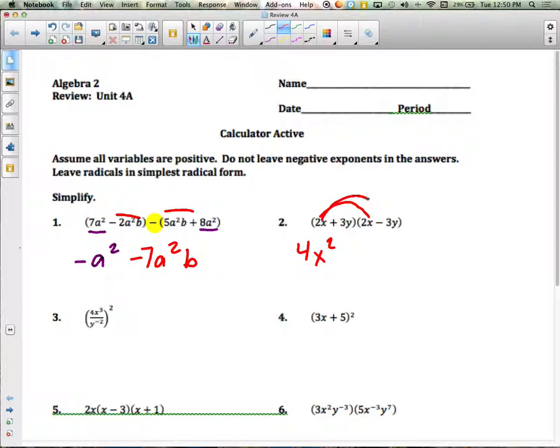And then if you go inside, you'll have 3y times 2x would be positive 6xy. And then if you do last, you'll have 3y times negative 3y is negative 9y squared.